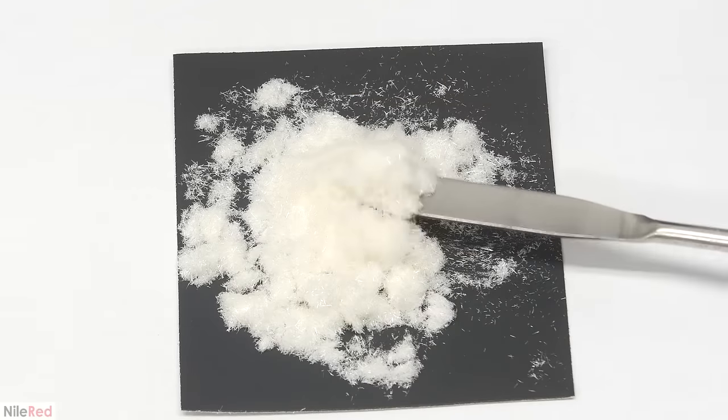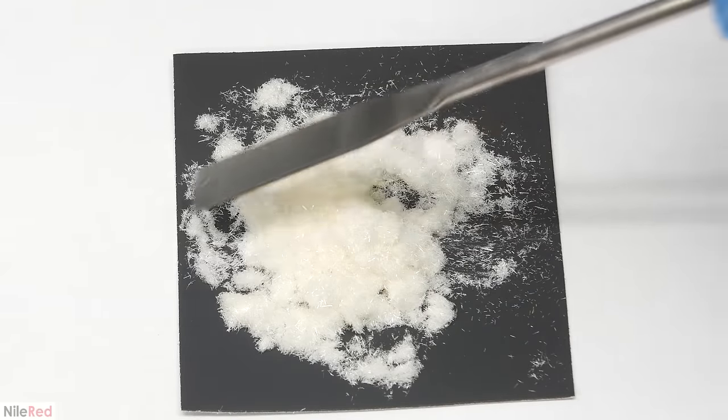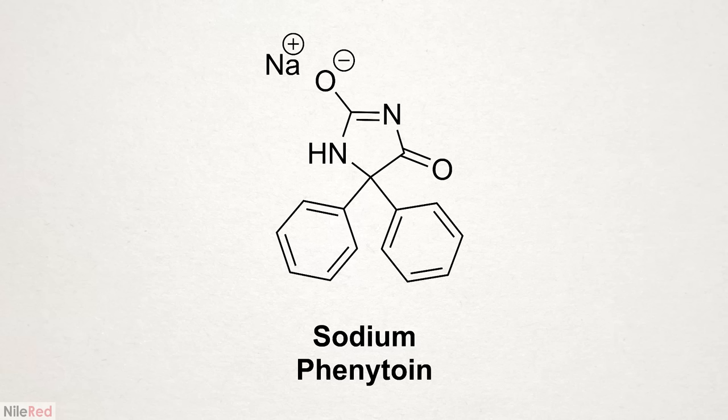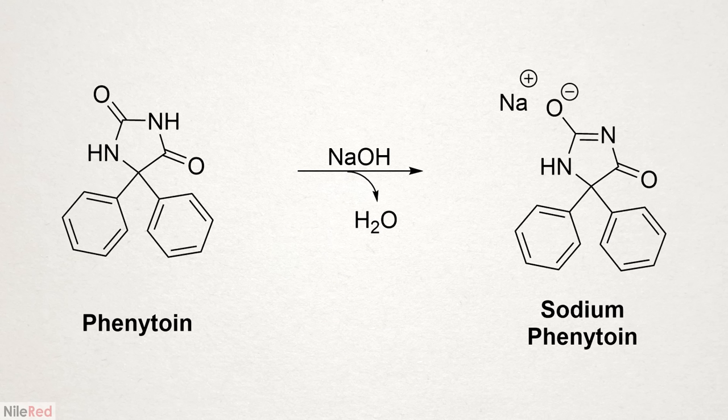All the phenytoin that I have here is in its unsalted form, which is insoluble in water and has to be administered by IV. To take it in pill form, it needs to be converted to a salt, usually sodium phenytoin. It's actually quite simple to do that, and I would just have to react it with a bit of dilute sodium hydroxide and then evaporate off the water.